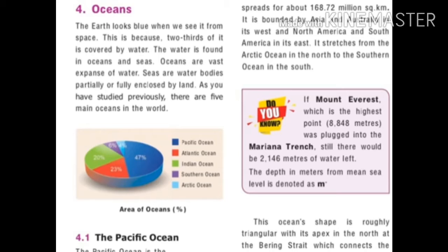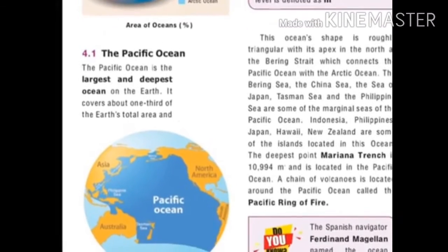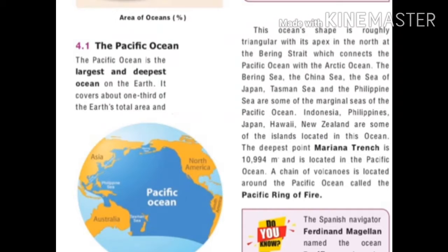There are five main oceans: Pacific Ocean, Atlantic Ocean, Indian Ocean, Southern Ocean and Arctic Ocean. The Pacific Ocean is the largest and the Arctic Ocean is the smallest. The Pacific Ocean is also the largest and deepest ocean, covering one-third of the earth's total area.